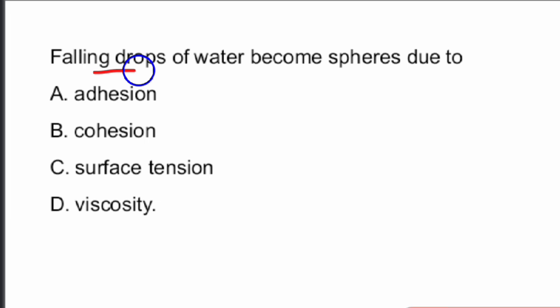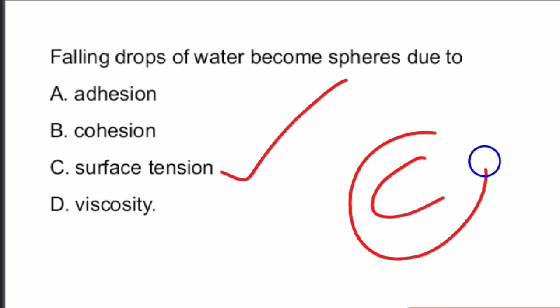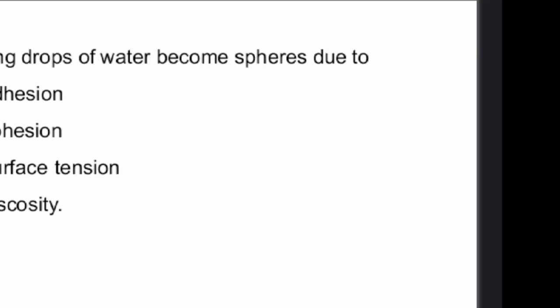Next question: Falling drops of water become spheres due to which property of fluids? The answer is Option C — surface tension. Falling drops of water become spheres due to surface tension.